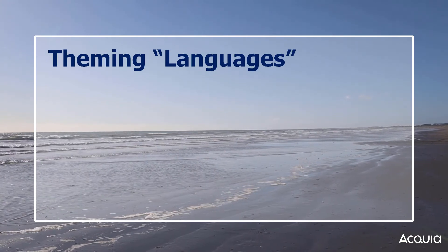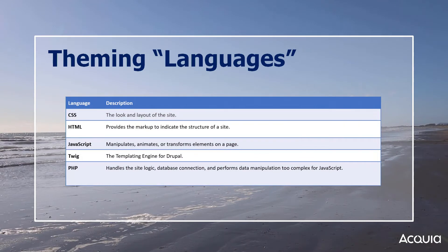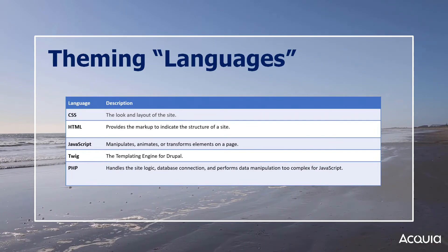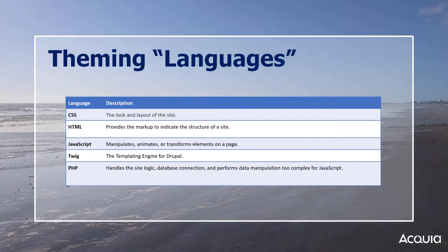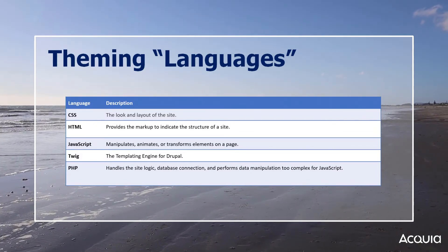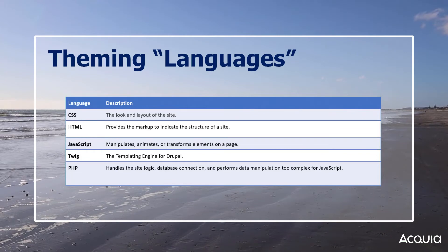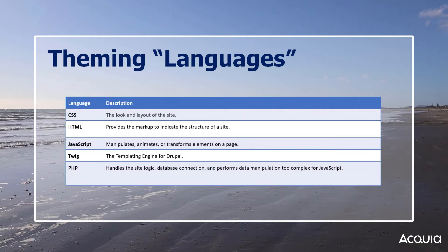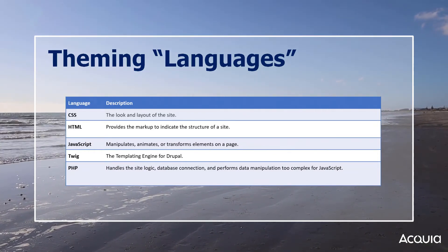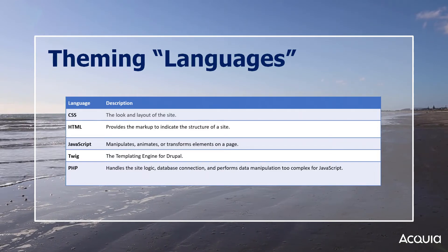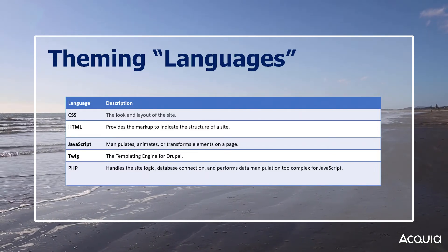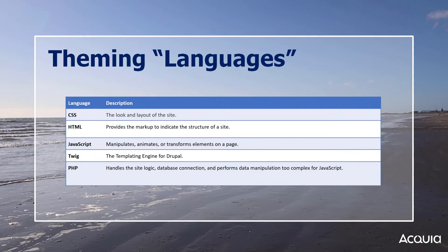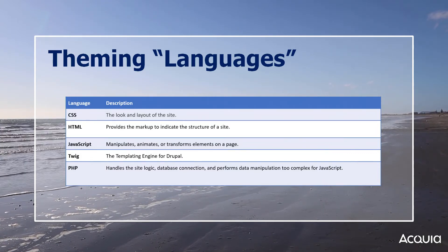Each language or scripting language has its own purpose. CSS is in charge of the look and the layout of the site. HTML provides the markup to indicate the structure of a site and tags elements so CSS and JavaScript can find them and transform them or perform actions on them. JavaScript manipulates, animates, or transforms elements on a page. With Twig — Twig is the templating engine for Drupal. It has a themer-friendly syntax and takes the place of PHP templates from previous versions of Drupal 7 and before, so themers don't need to know PHP.